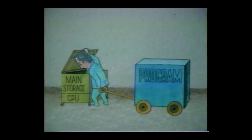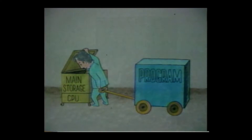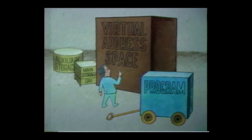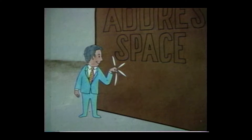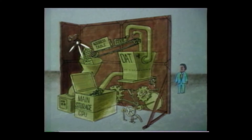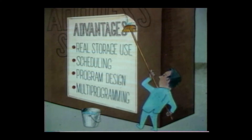Early computer systems imposed a difficult problem on their users due to the relatively small size of their main storage. Virtual storage techniques have substantially reduced this problem with the implementation of a single large address space, up to 16 megabytes in size, of virtual storage. This virtual address space appears real to the user, although it's actually made possible through tables and hardware and software translation. The single virtual storage approach has many advantages, such as more efficient use of real storage, easier job scheduling, easier program design, and improved multi-programming operations.